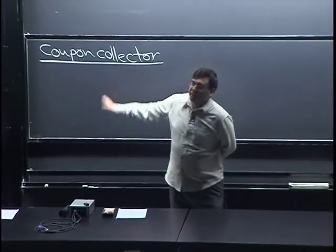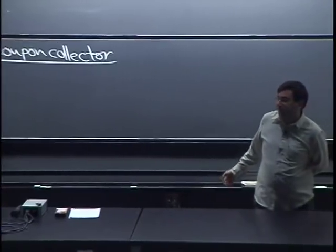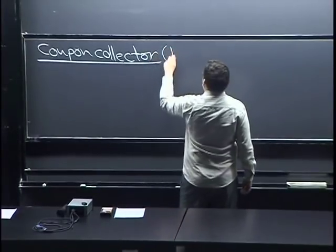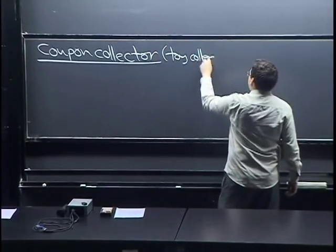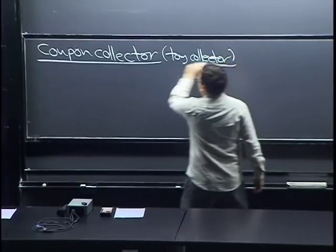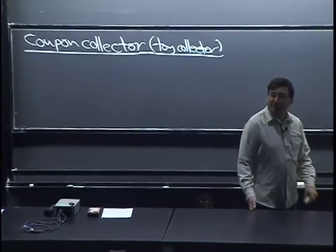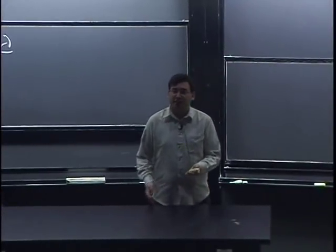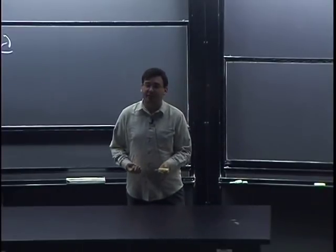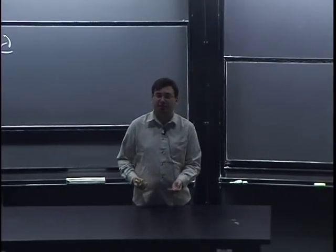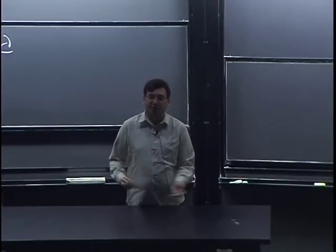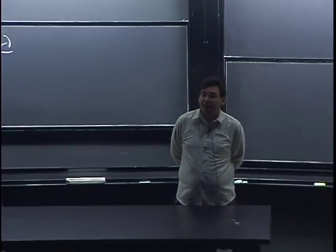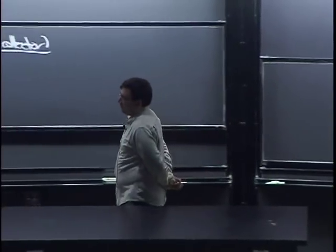This is a really good example. It happens to be very useful in a lot of cases. I think of it as the toy collector problem, because I don't collect coupons. The problem is that you have a certain number of different types of toys and you want to collect a full set. It's like one of these happy meal type of things where you buy a happy meal at McDonald's and you get a random toy and you want the full set. The problem is: on average, how long will it take you to collect the full set?